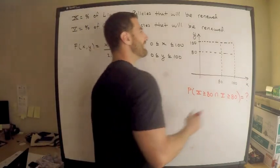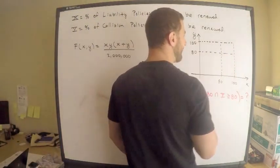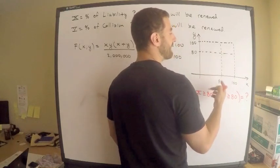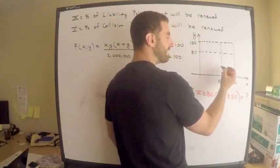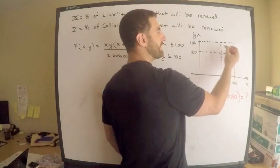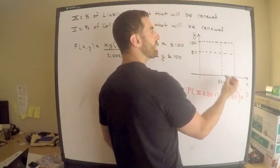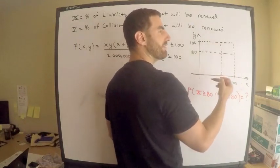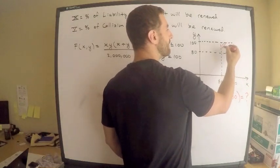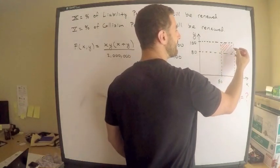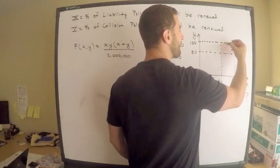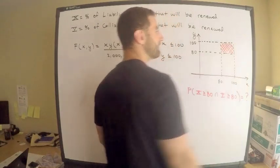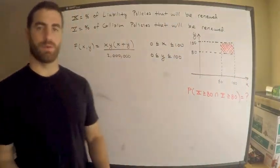What is it that we're looking for? This is an and statement, so I need X to be at least 80. So technically, I would shade all of this. X is at least 80, but also Y is at least 80. Simultaneously, they have to both be at least 80, which means I need this square here. And yes, actually, it is a square.